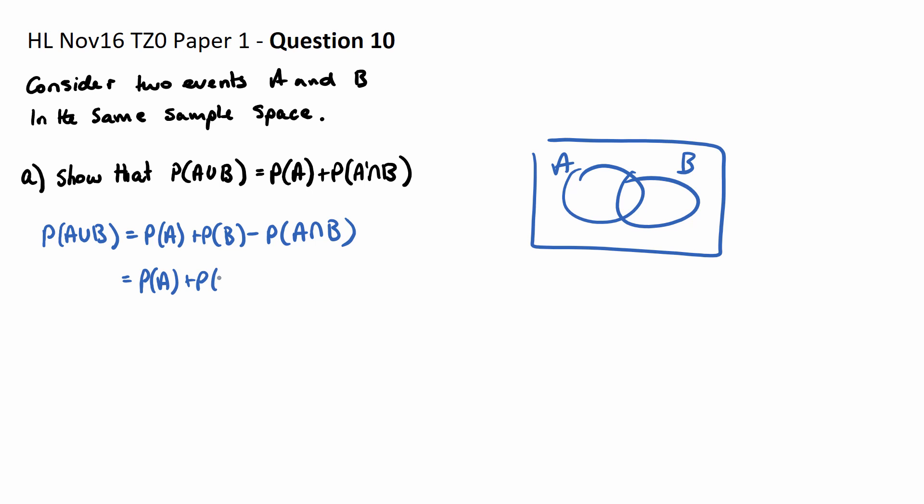and then this is just to encapsulate B, plus the probability of not A and B, so not A and B, and then I'm still going to minus away the probability of A and B.